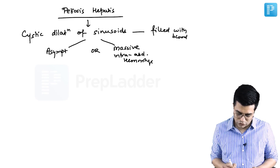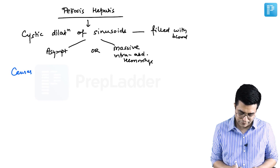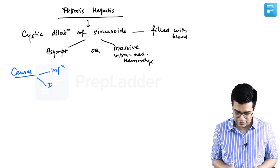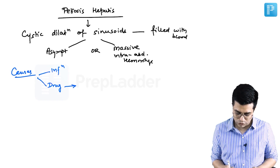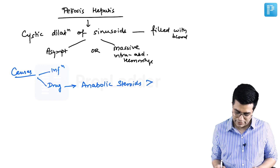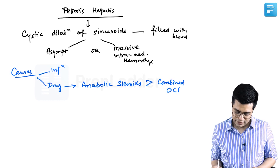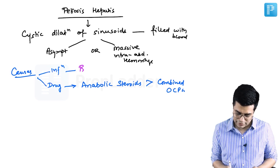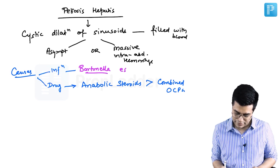What are the common causes? There are infective causes and drug-induced causes. Among drug-induced causes, the most common drug associated is anabolic steroids, followed by combined OCPs. In the case of infections, Bartonella has been implicated, especially in HIV-positive individuals.